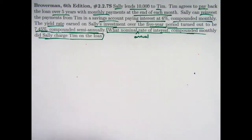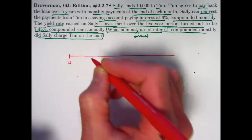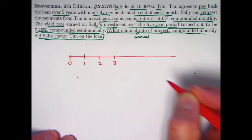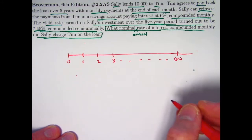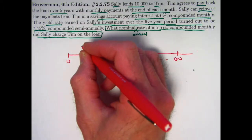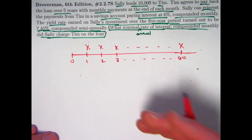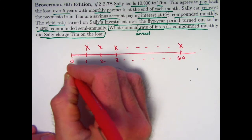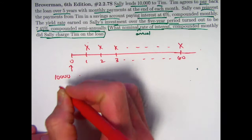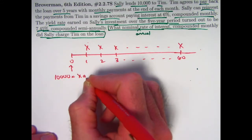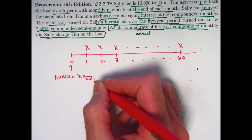Let's get our bearings with a number line. Sally makes the loan to Tim at time zero, and times 1, 2, 3, etc. are months, not years — five years is 60 months, so we stop at time 60. Tim makes unknown payments, call them X, at times 1, 2, 3 up to 60, based on whatever interest rate Sally is charging. The present value of this loan at time zero is Sally's $10,000 investment, which also equals X times a-angle-60 at j, where j is the effective monthly interest rate.